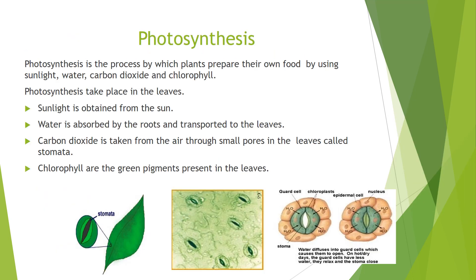Now we shall study autotrophic mode of nutrition in detail under the process called photosynthesis. Photosynthesis is the process by which green plants make their own food. Green plants are able to prepare their food because they have chlorophyll in their leaves. The leaf has tiny pores called stomata. The stomata are the tiny pores present in the leaves and through these stomata the gaseous exchange takes place.